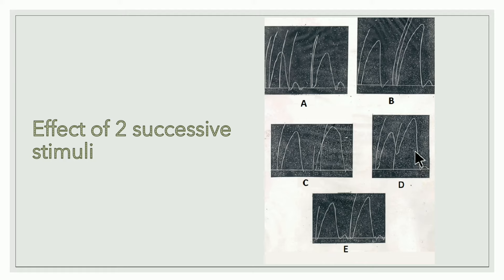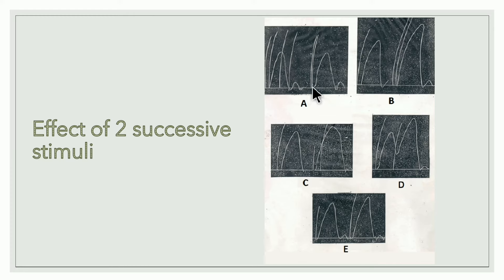Graph D: the second stimulus is applied during the relaxation period — height increases due to the beneficial effect. Graph E: the second stimulus is applied after relaxation, in the physiological curve phase — height also increases due to the beneficial effect. Summary: A — no change, absolutely refractory; B — summation of stimuli; C — summation of contractions; D — beneficial effect (relaxation period); E — beneficial effect (after relaxation).